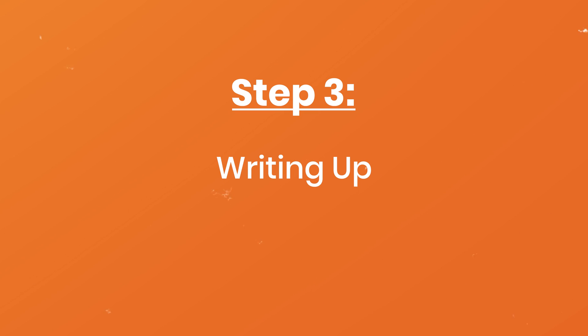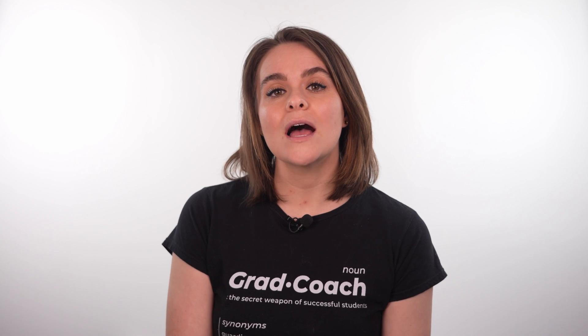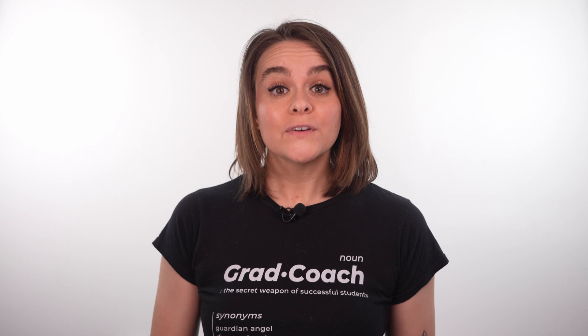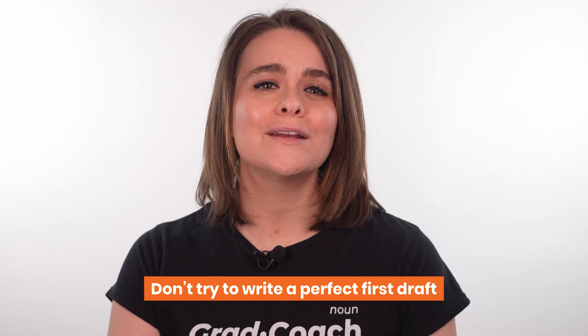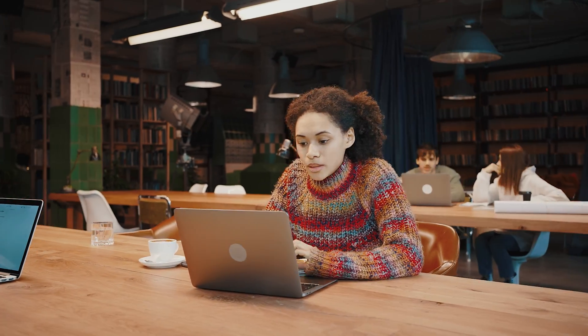On to the third and final step. Once you've got a basic outline in place, it's time to get writing. All too often, students hit a brick wall right about here. There's a lot to be said when it comes to writing up the literature review, but we'll share three practical tips to help you get started. First and foremost, it's essential to approach your writing as an iterative process — you need to start with a really messy first draft and then polish it over multiple rounds of editing. Don't waste your time trying to write a perfect chapter in one go.